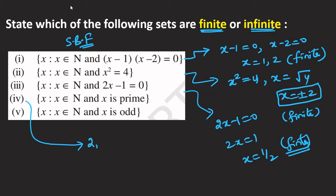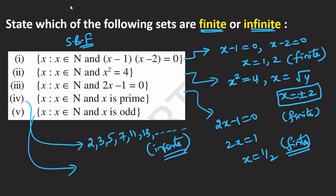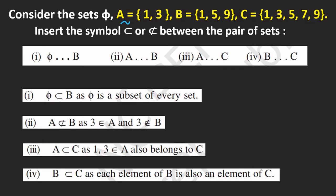Fourth example: prime numbers — {2, 3, 5, 7, 11, 13, ...} and so on, with infinite terms, so that is an infinite set. Last: odd numbers — {1, 3, 5, 7, 9, ...} and so on, also infinite terms, so that is also an infinite set.